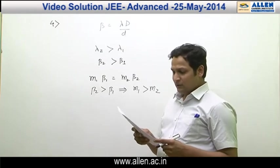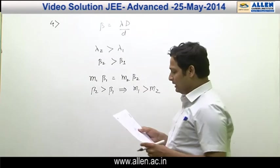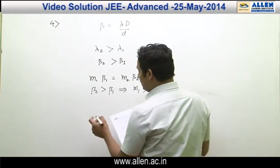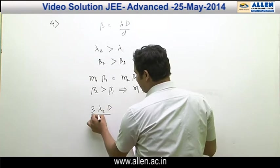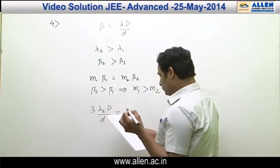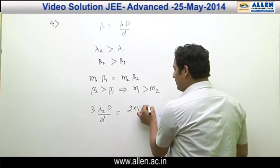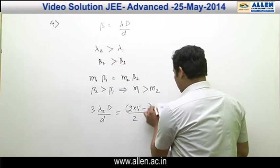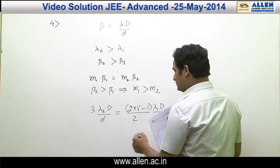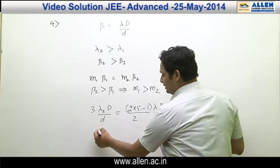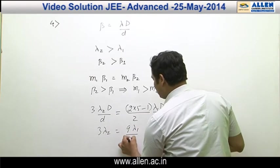And option C: for the central maximum, third maximum of lambda 2 overlaps with fifth minimum. Third maximum of lambda 2, that means 3 lambda 2 D divided by small d, should be equal to fifth minimum of lambda 1, that means 2 into 5 minus 1 divided by 2 into lambda 1 D divided by small d. By solving we will get 3 lambda 2 is equal to 9 lambda 1 divided by 2.